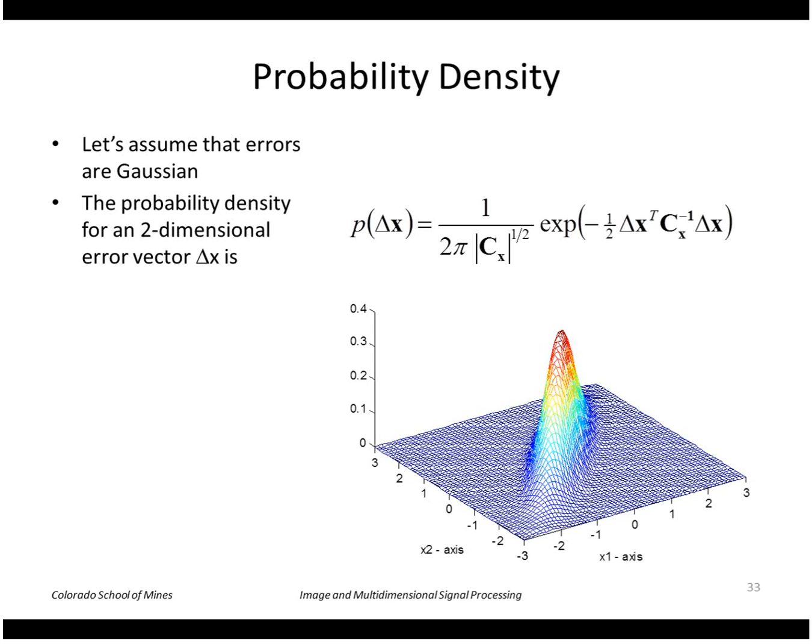We can interpret the covariance as a probability if we assume that the errors are Gaussian. So the probability density for a two-dimensional error vector x is given by this two-dimensional Gaussian. Here again, c is the covariance matrix.